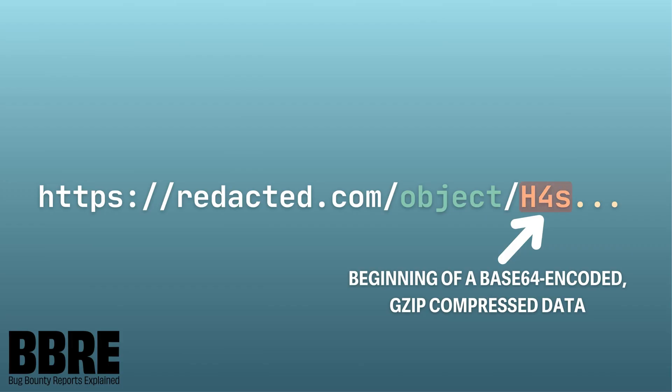This is a good thing to be aware of when you are looking for serialization vulnerabilities, because this start — H4S — is what you get when you have a Java object that has been compressed by GZip and then encoded in Base64.